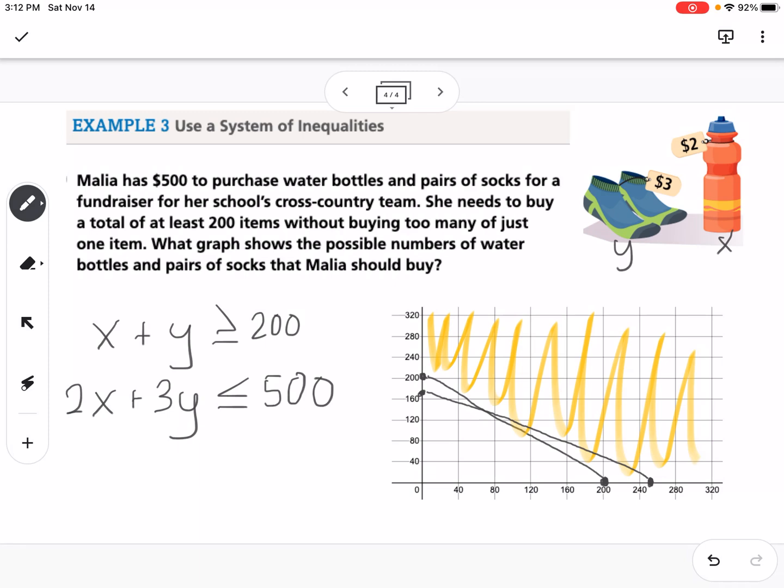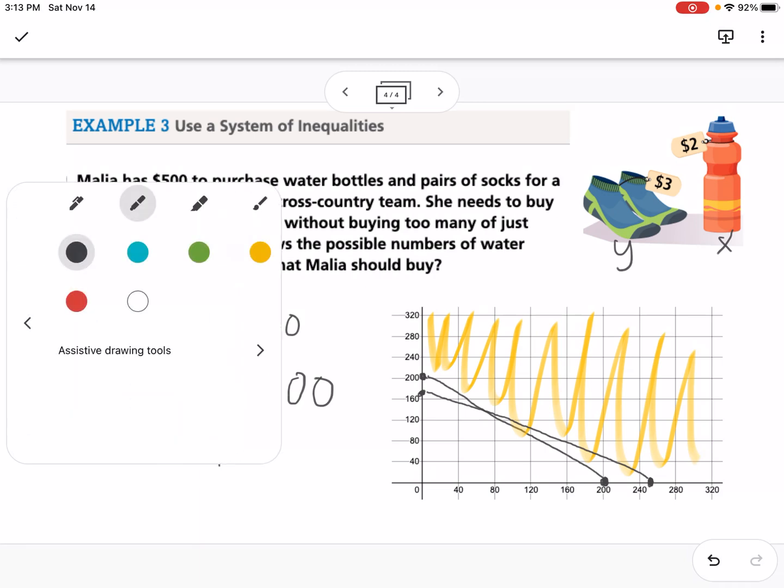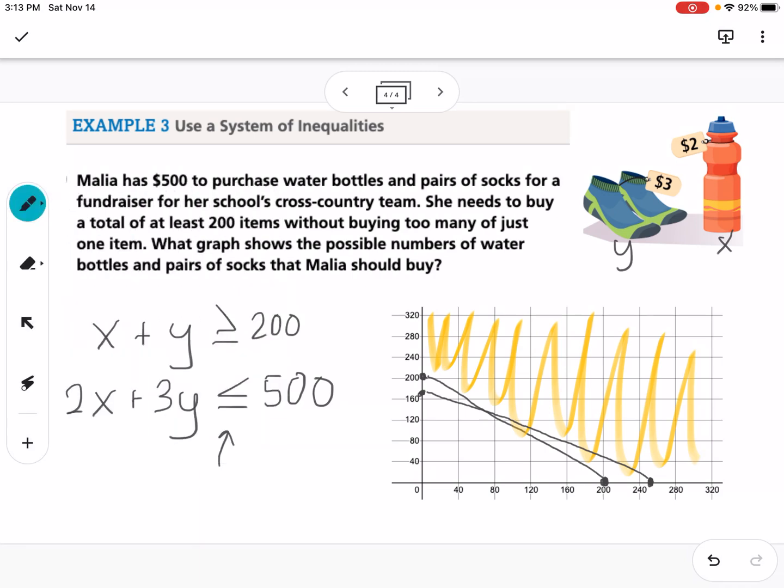But this line, notice how this one's going less than. If I plugged in 0,0, it would work. So that means for this one, I need to shade below that line. Again, this is kind of hard to see, but the double shaded region is that little triangular sliver in there. So any point that falls in there would be a solution to our system. Let me know if you have any questions.